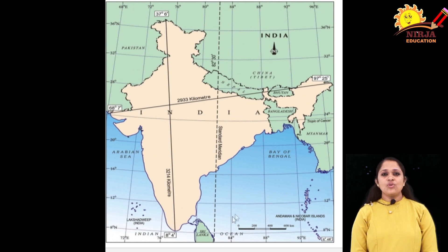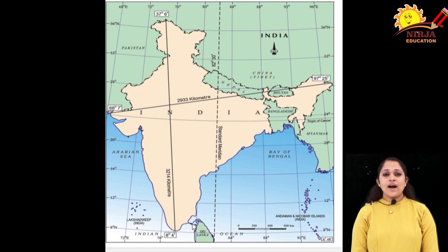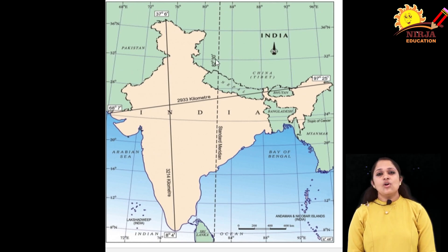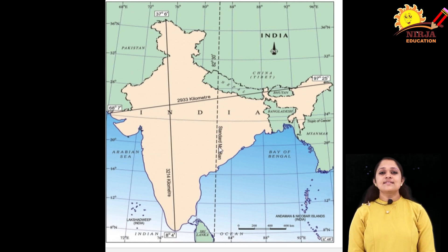Here you can see a narrow line called a strait — a narrow stretch of sea linking two large seas, such as the Palk Strait and the English Channel. Another important line is the Standard Time Meridian, that is 82 degrees 30 minutes east longitude. It passes through the middle of India at Mirzapur in Uttar Pradesh, and this is considered India's standard time meridian. Why it is considered the standard time meridian will be discussed in the next video.